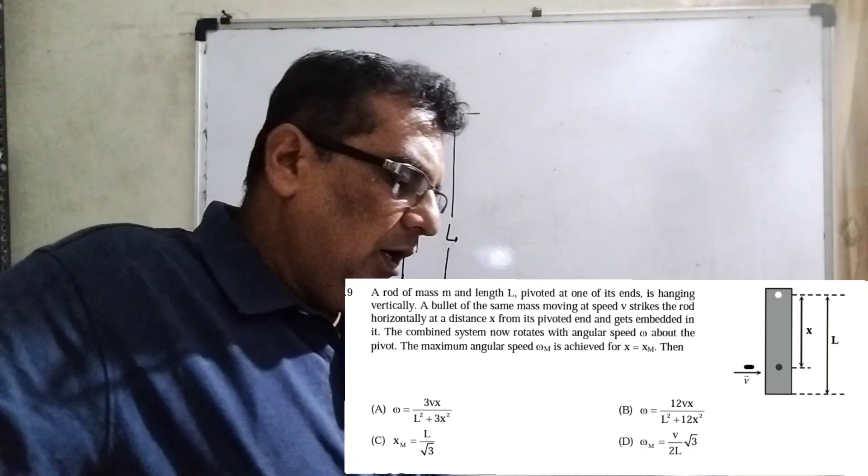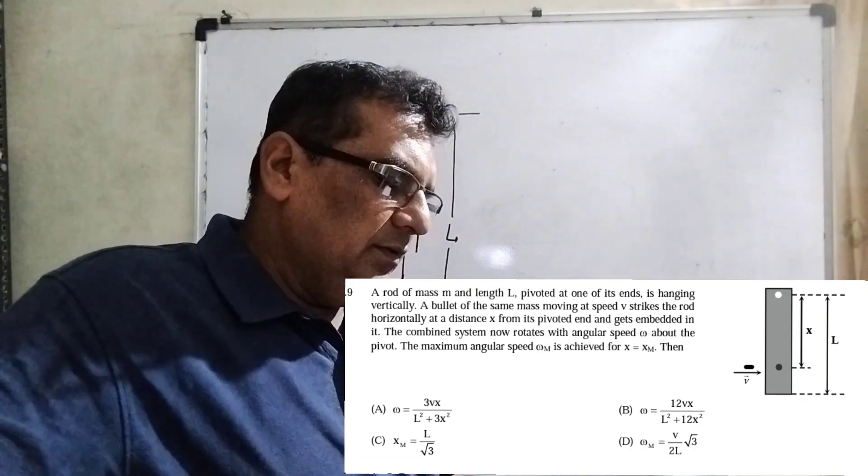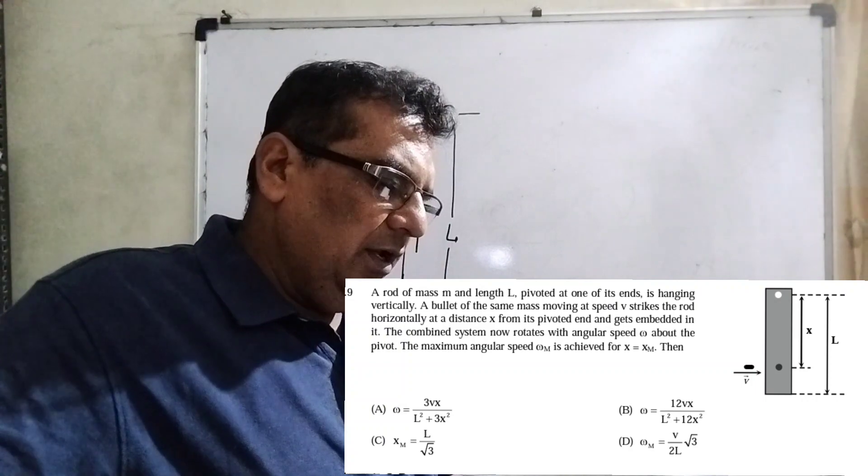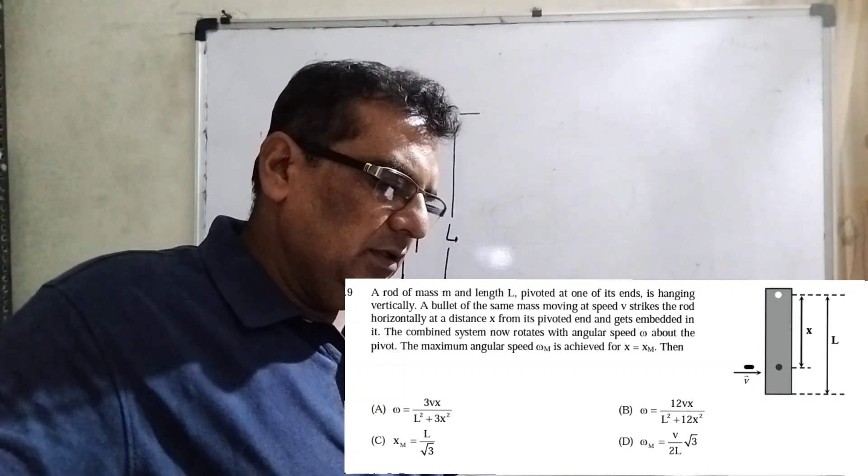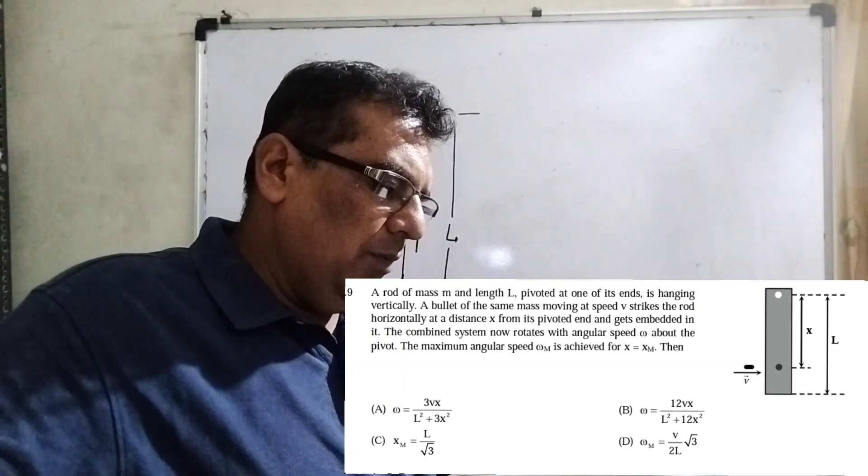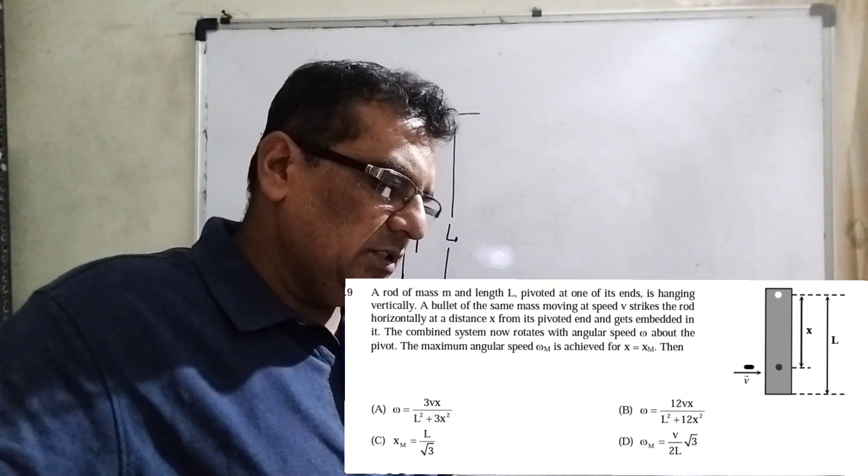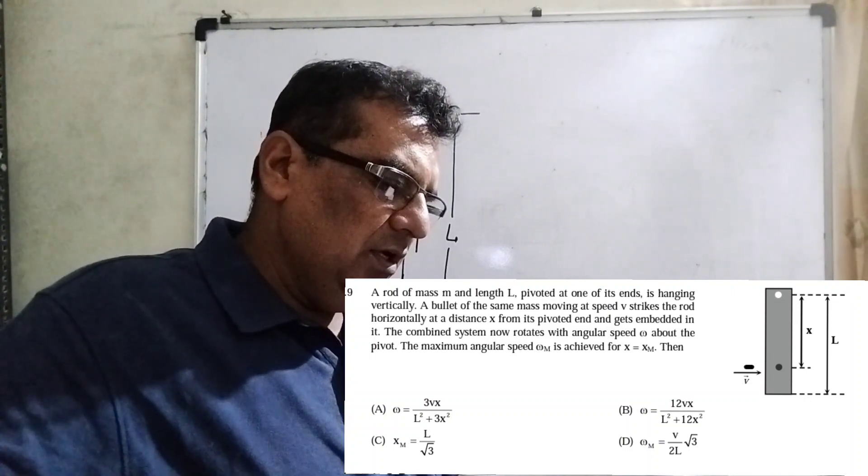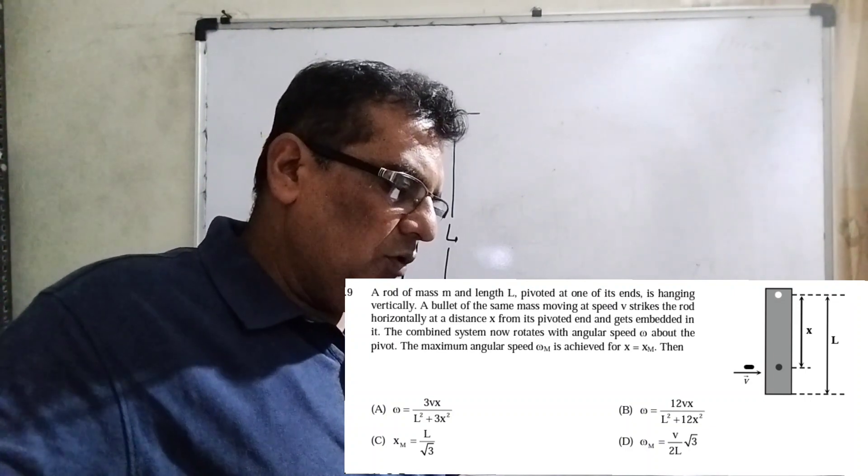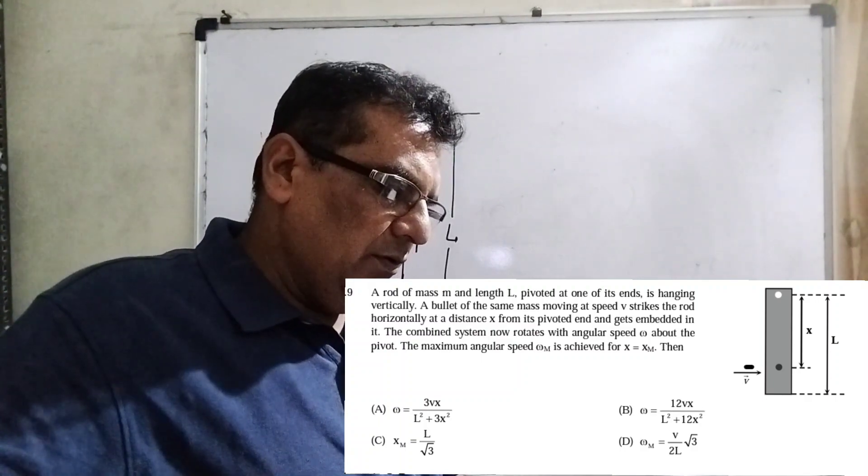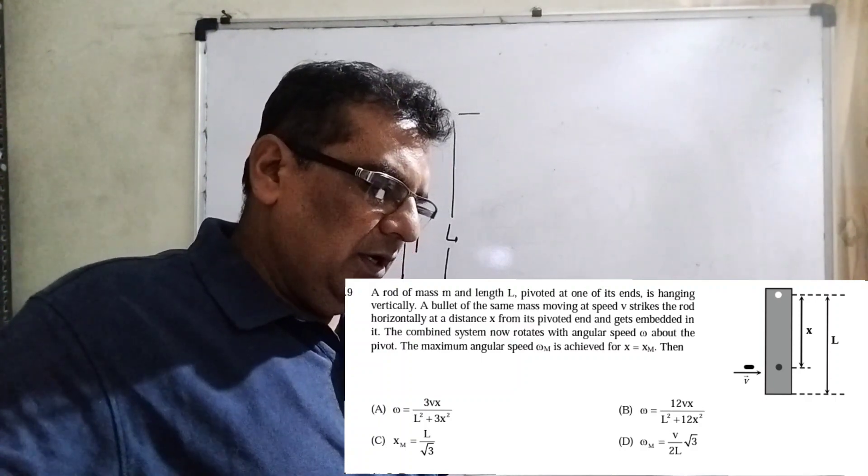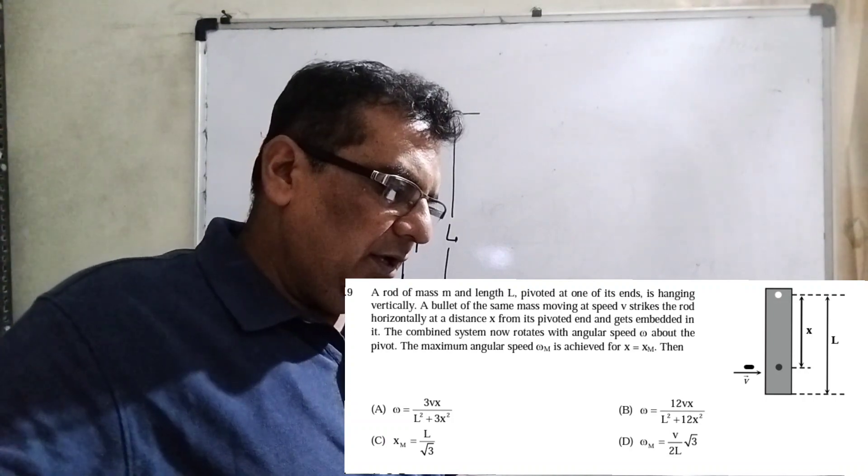What the question says: A rod of mass small m and length capital L, pivoted at one of its ends, is hanging vertically. A bullet of the same mass moving at speed v strikes the rod horizontally at a distance x from its pivoted end and gets embedded in it.